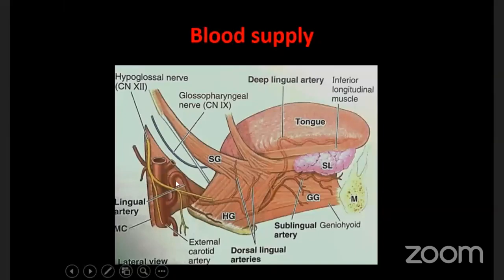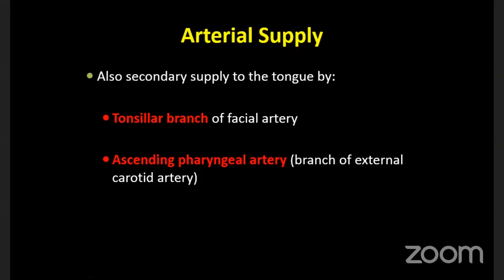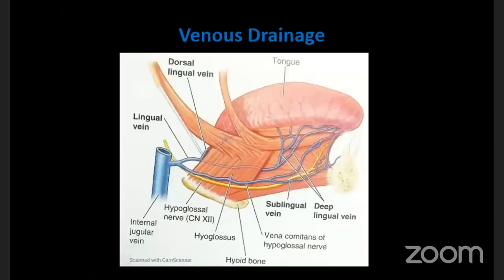The main artery supplying the tongue is the lingual artery, which arises from the external carotid artery. After arising from the external carotid artery, the lingual artery runs deep to the hyoglossus muscle, where it gives rise to the dorsal lingual artery - which supplies the root of the tongue. The artery then emerges from the hyoglossus, runs upward, and supplies the body and tip of the tongue. Additional supply comes from the tonsillar branch of the facial artery and the ascending pharyngeal artery.